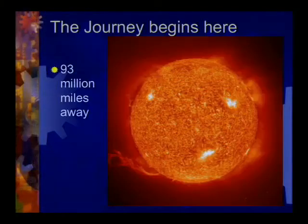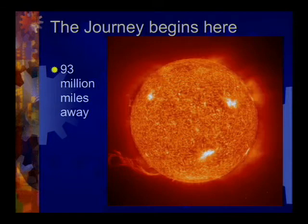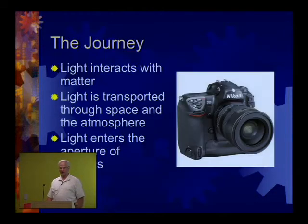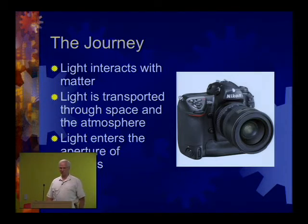Our pixels start their journey about 93 million miles away at the Sun — whether directly through light that comes into our camera after bouncing off something, or indirectly stored in biomass or wind energy. Eventually it goes through the atmosphere, does a little dispersion, interacts with matter, and is transported through space until it enters the aperture of the lens.